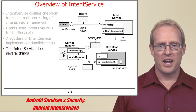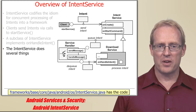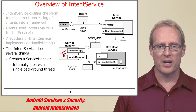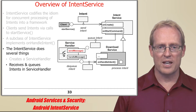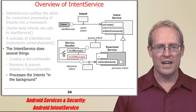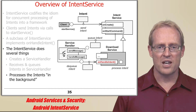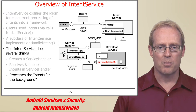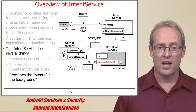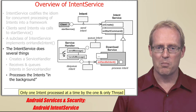The intent service implementation applies the idiom described earlier. Its onCreate hook method creates a service handler which internally spawns a single background handler thread. Its onStartCommand hook method calls the service handler's sendMessage method to enqueue each intent received from clients into the message queue managed by the handler thread running in the background. The service handler's handleMessage hook method then receives the message containing the intent in the handler thread and dispatches the overridden onHandleIntent hook method to process the intent, ensuring that long-duration processing doesn't block the user interface thread, though only a single intent is processed at a time.